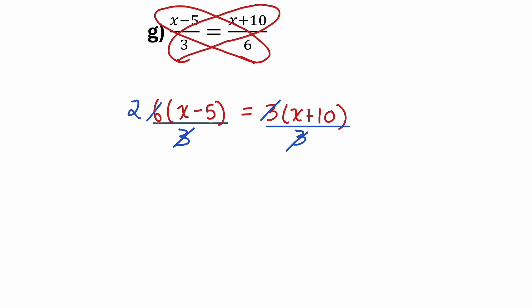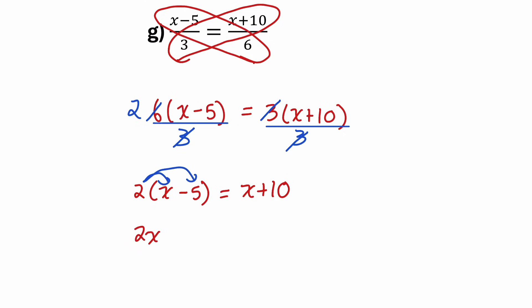So on the left, I have 2 times x minus 5, and on the right, I just have x plus 10. On the left, I'll expand by distributing the 2 to both terms, giving me 2x minus 10. On the right, I have x plus 10.